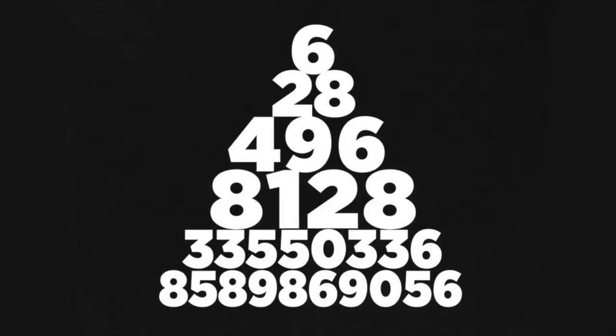All even perfect numbers end in 6 or 8, and have a corresponding Mersenne prime. There are no known odd perfect numbers, so up to the present, there's a one-to-one correspondence between known Mersenne primes and known perfect numbers.